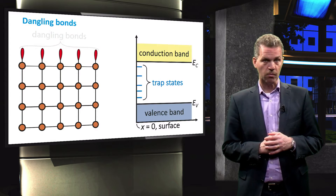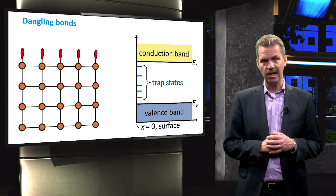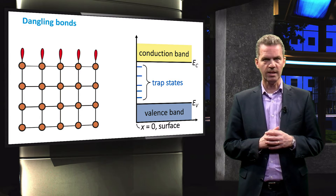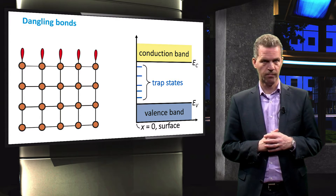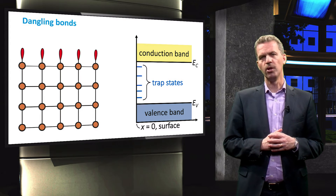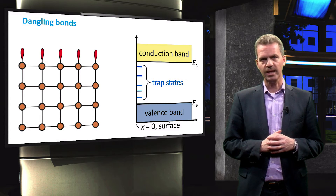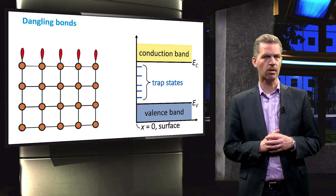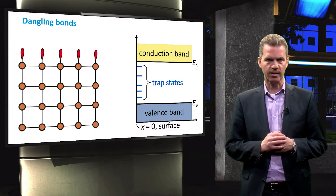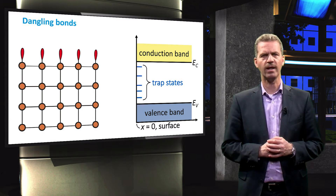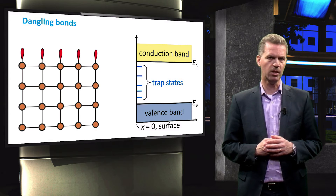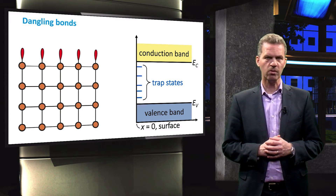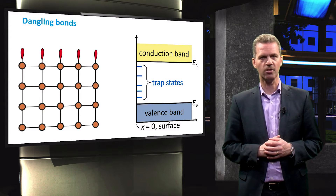In the band diagram, these defects are represented by energy levels in the band gap, and as these defects are at the surface, we draw these levels at the surface only. We know already from an earlier video that these energy levels in the band gap will induce Shockley-Read-Hall, or SRH, recombination. In fact, for semiconductors that hardly have any defects in the bulk of the material, the recombination might be dominated by surface recombination, because most of the defects reside at the surface.